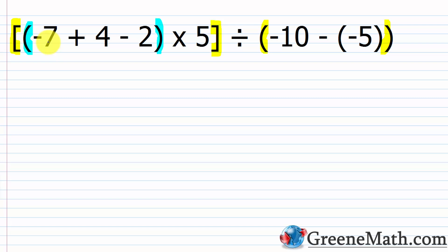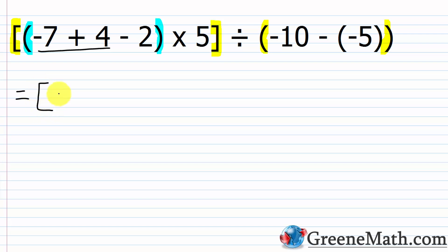When you go inside grouping symbols, you reapply the order of operations and start by looking for grouping symbols again. Inside the parentheses I have negative seven plus four minus two — all addition and subtraction, so work left to right. Negative seven plus four: the sign is negative, seven minus four is three, so that's negative three. We replace this part with negative three, and then we have minus two.